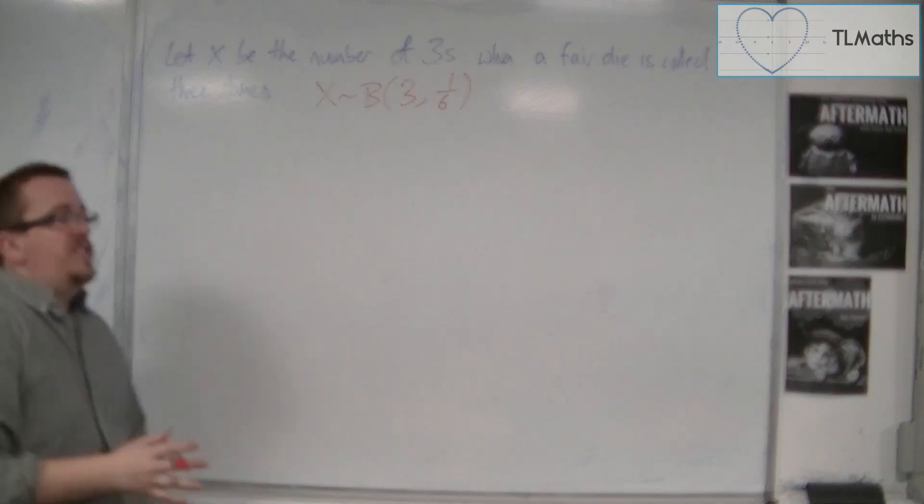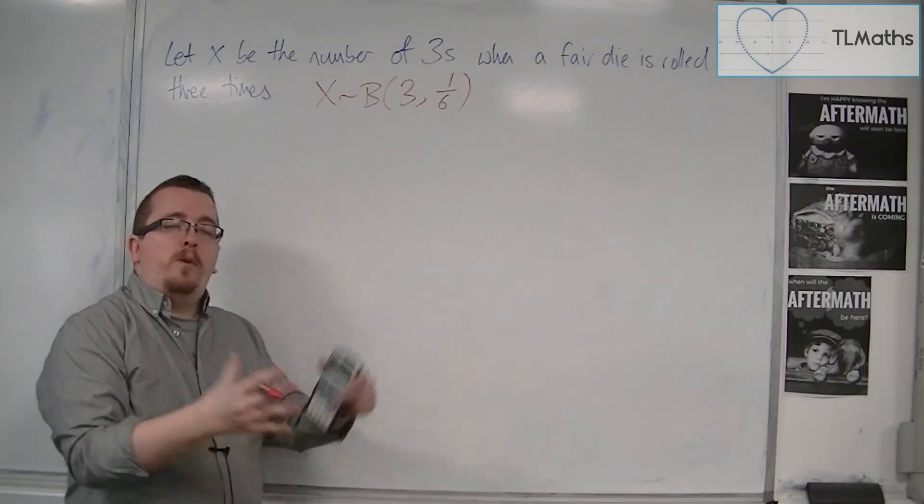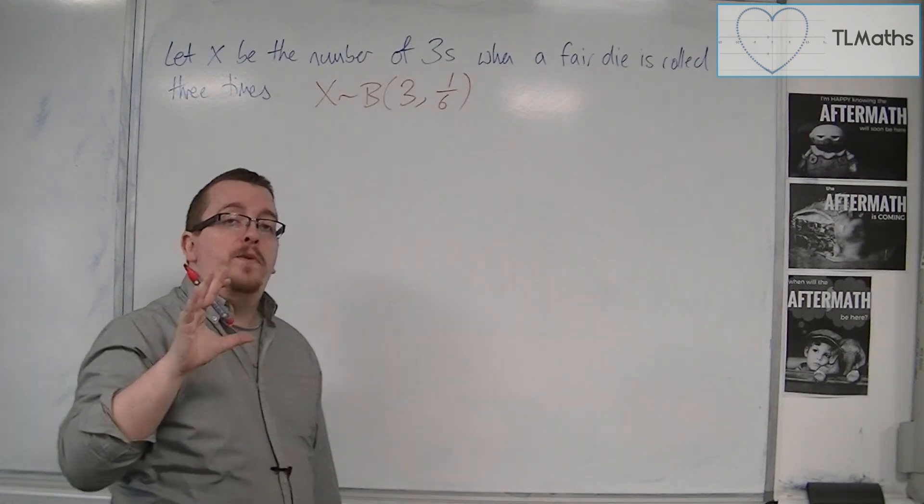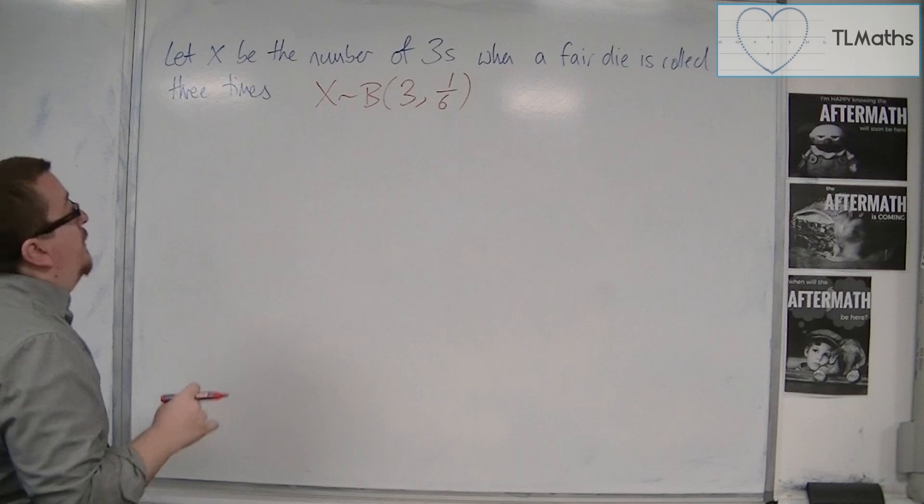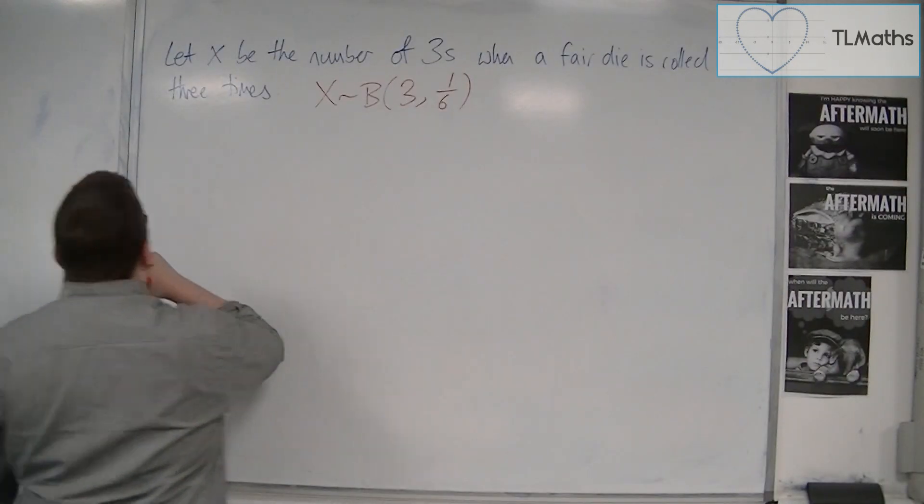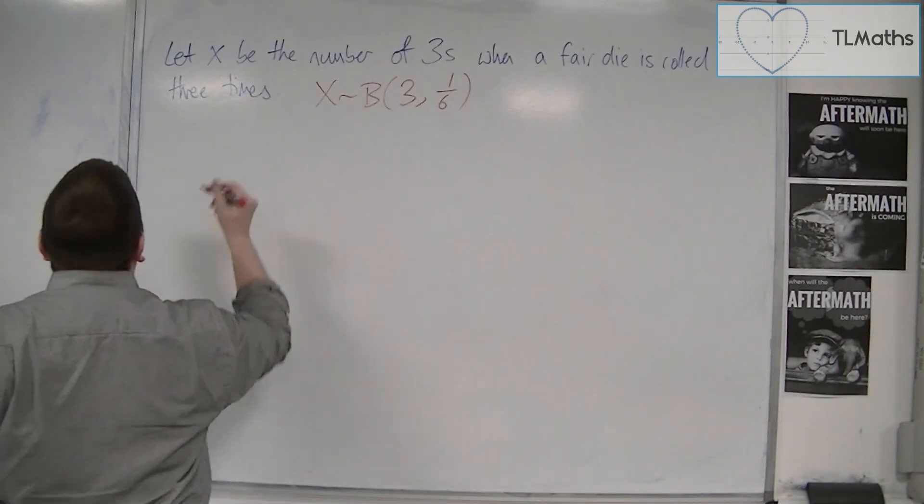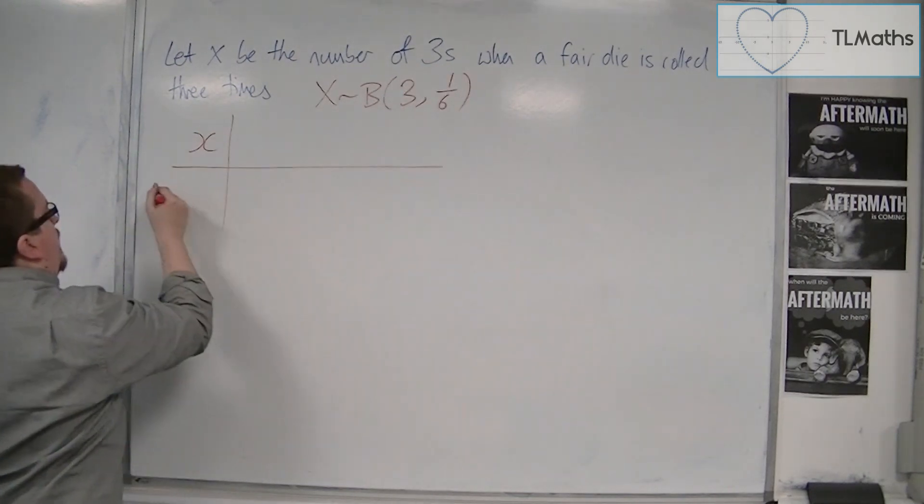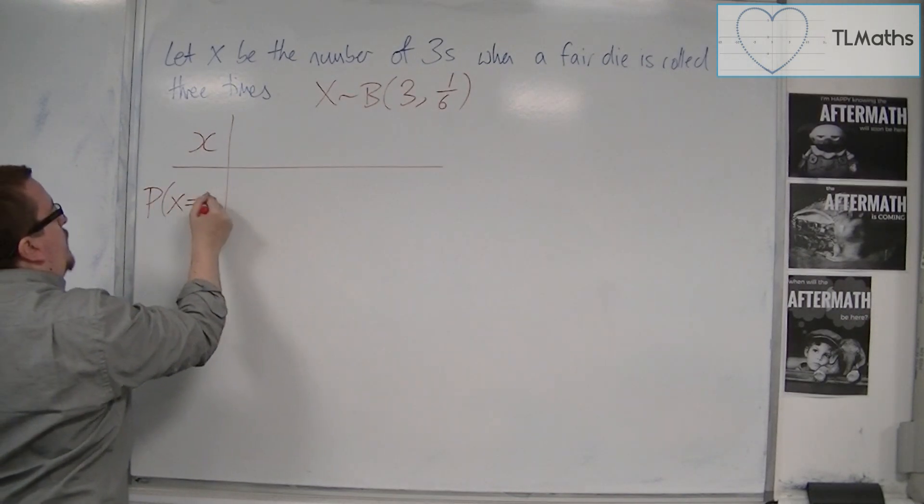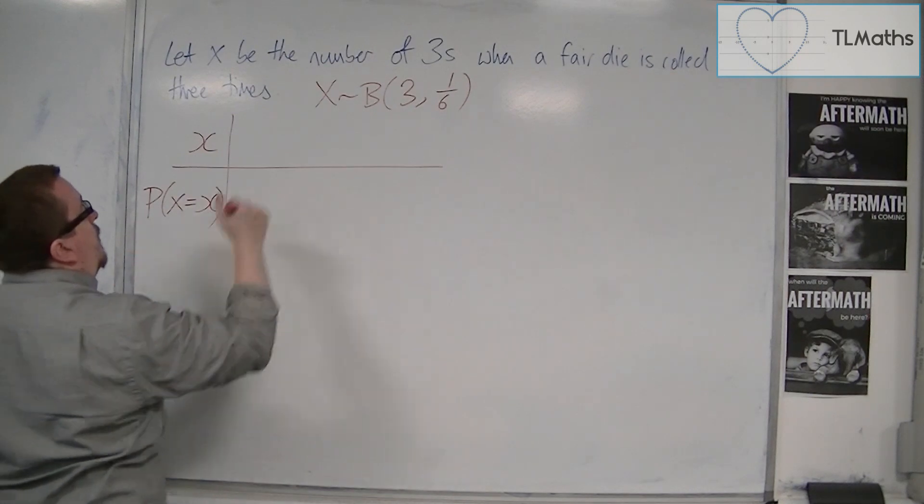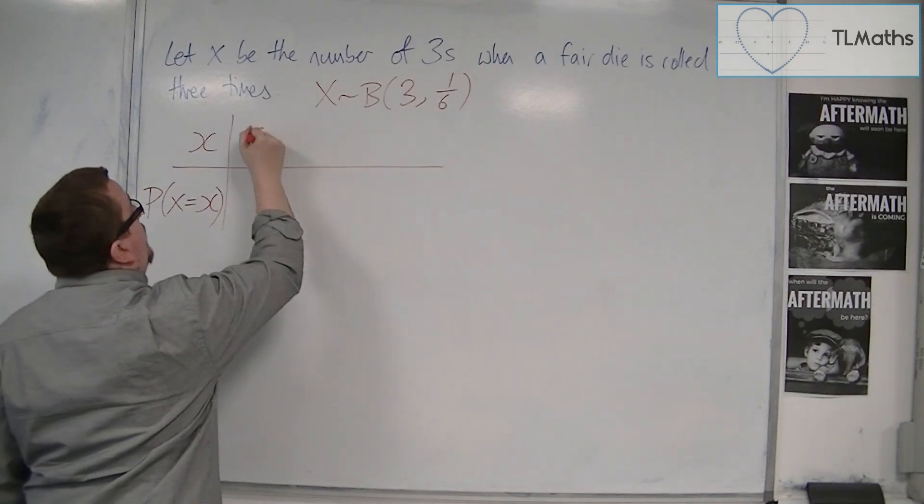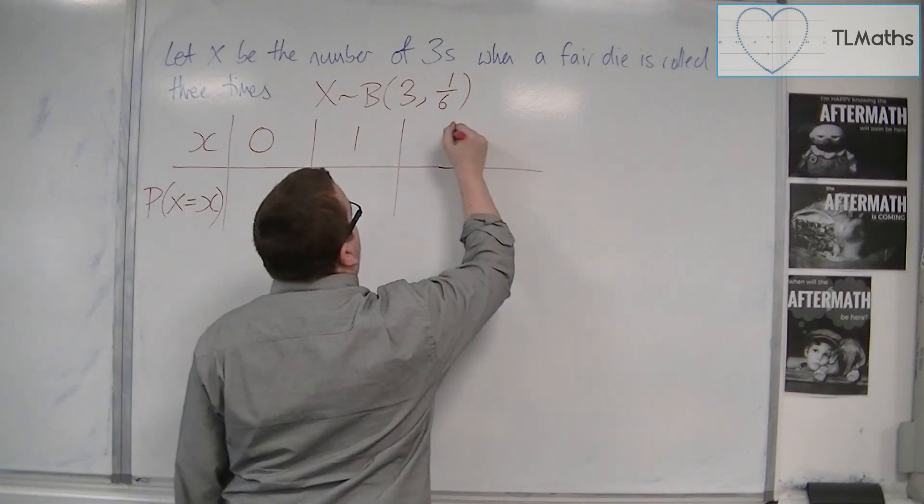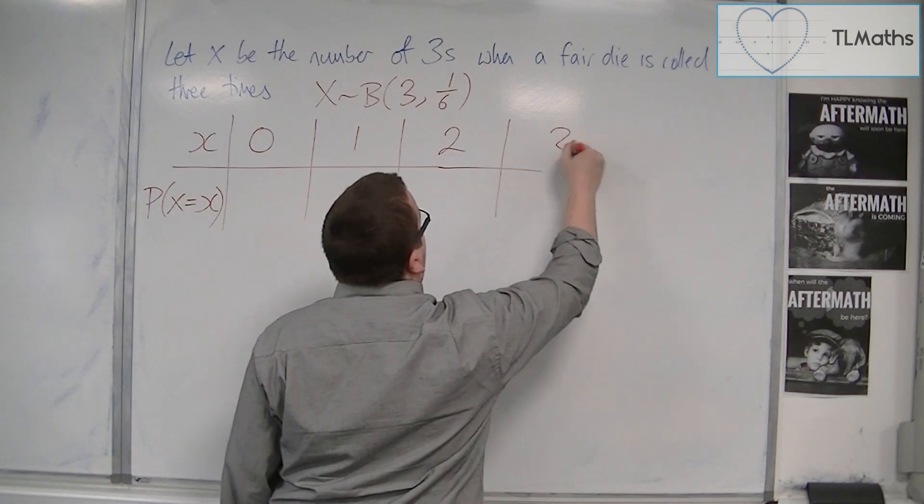So what we could do is we could draw out the probability distribution in a tabular form, like when we did this with the discrete random variables. So we could set up a table that looked something like this. So here are my x's, here are the probability of x being equal to each of these. So the 3's could appear 0 times, it could appear once, it could appear twice, or it could appear 3 times.